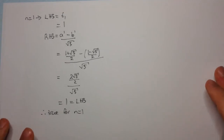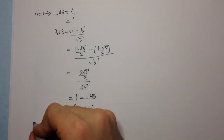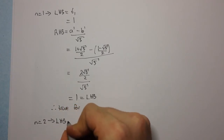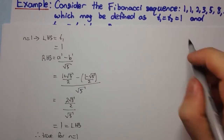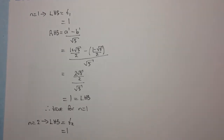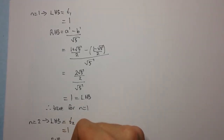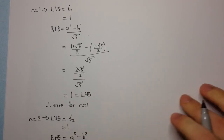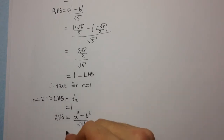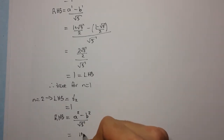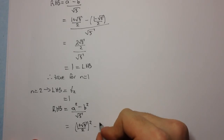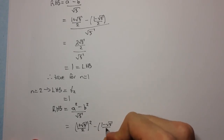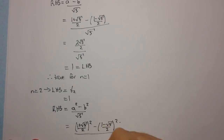Now we also need to prove for n equals 2. So for n equals 2, the left-hand side is equal to t₂, which is also equal to 1 by definition of the sequence, so t₂ equals 1. Now we look at the right-hand side, which is a² minus b² over root 5. Now remember a was (1 plus root 5) over 2, so squared, minus (1 minus root 5) over 2, squared, all over root 5.